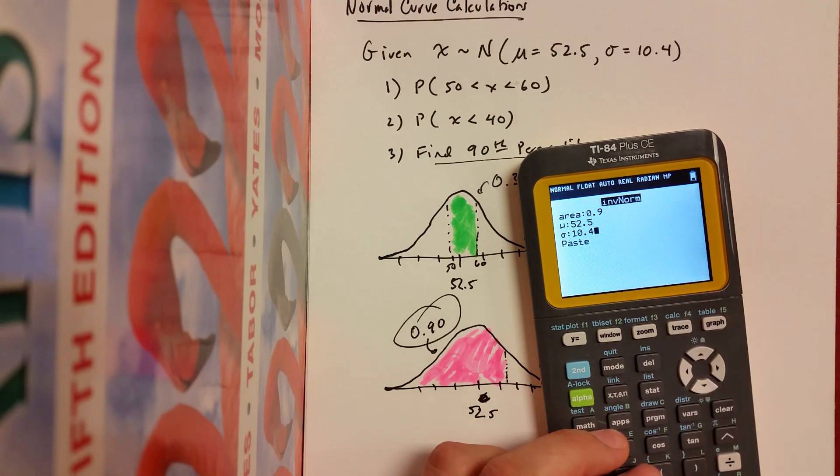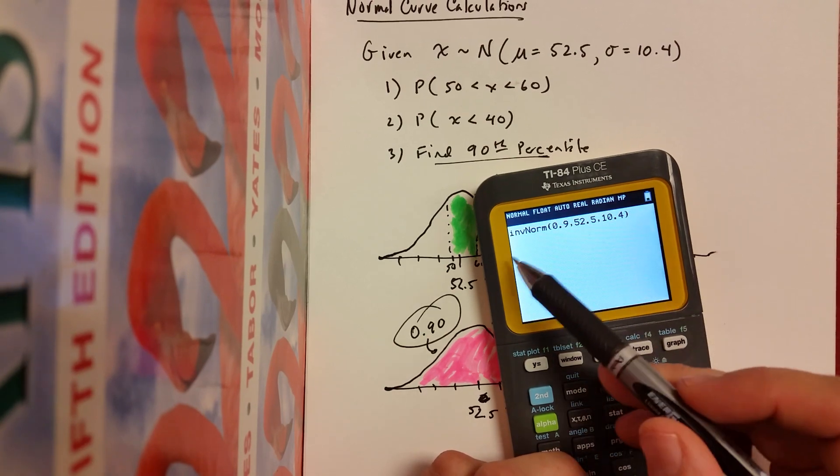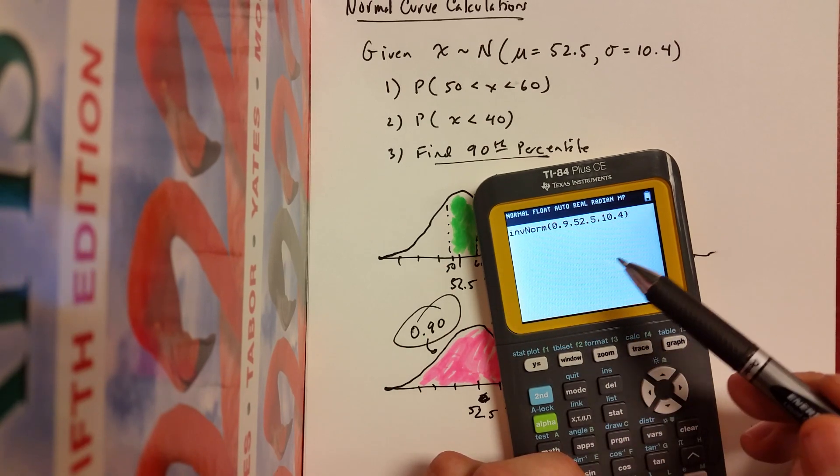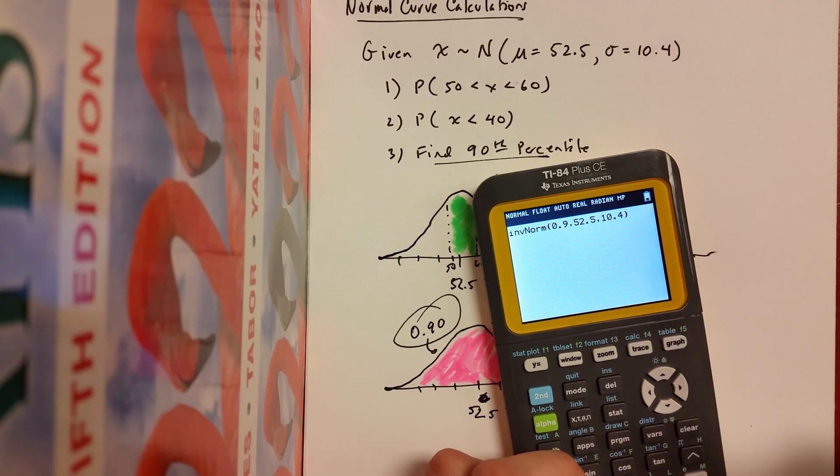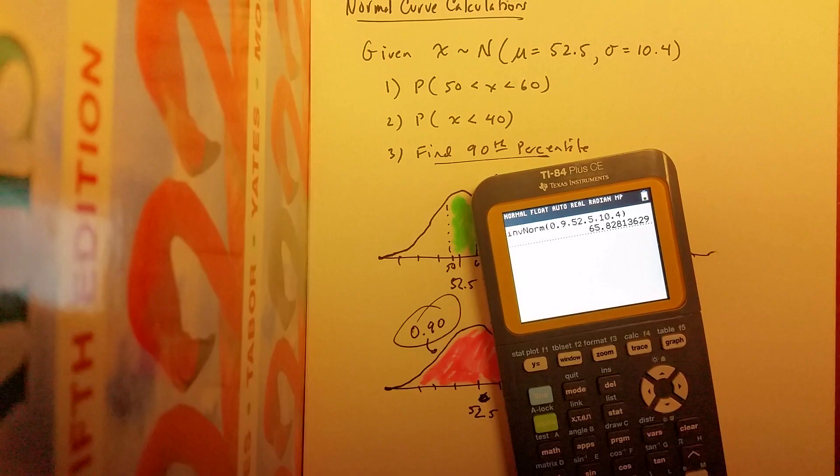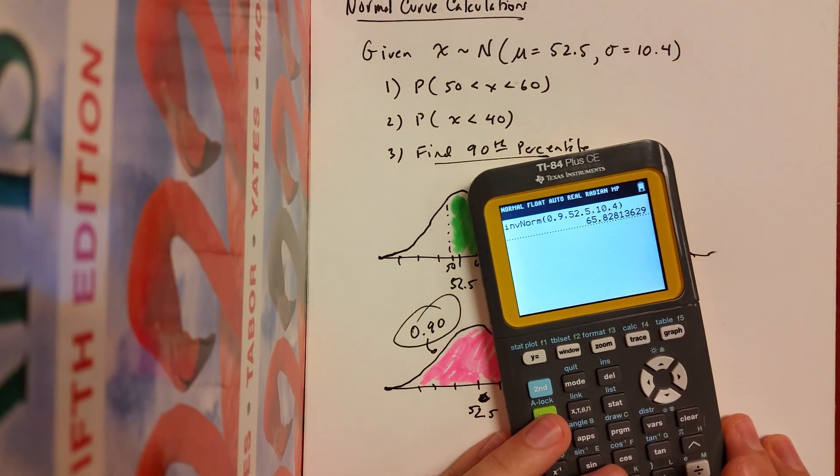And once again, for those folks without the stat wizard, you just have to know to type the numbers in, in this order, the area, the mean, and the standard deviation just to enter what? Oh my gosh, my lights turned off. Hold on. We have these lights on motion sensor. So I guess I wasn't moving enough. Sorry about that.